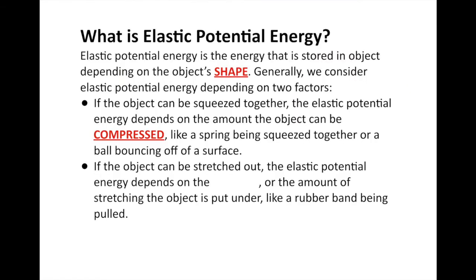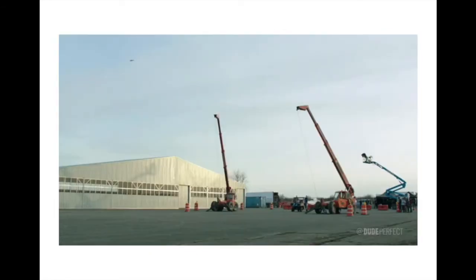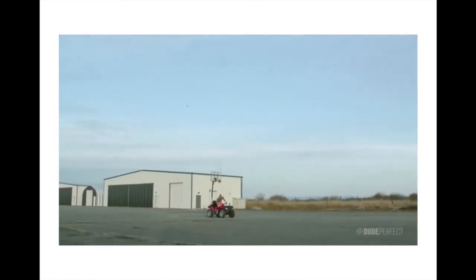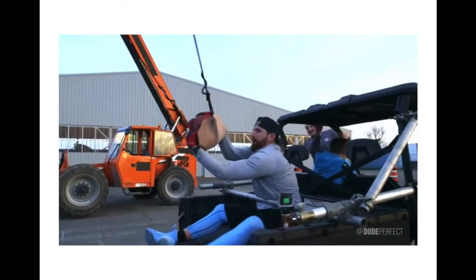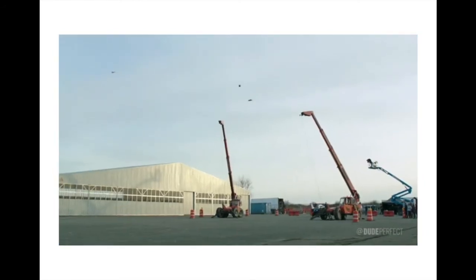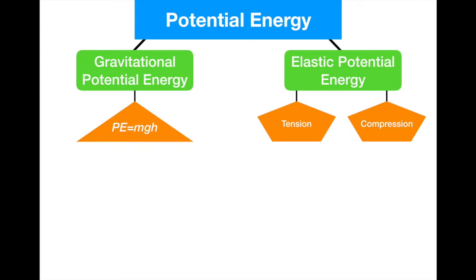The other factor is if you can stretch it out — the elastic potential energy depends on the tension, or the amount of stretching the object is put under. For example, a rubber band being pulled, like Dude Perfect, which pulls things. As the rubber band is pulled backwards, more and more tension is being added to it and it stores more potential energy to be used later when the basketball is in flight.